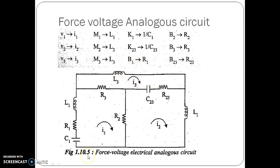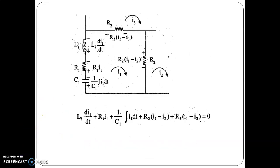Now we write the mesh equations. Since there is no applied force, there is no input voltage source. In the force-voltage analogous circuit, voltage is the input and current is the output, so we write equations in terms of current. For mesh 1: (1/C1)∫i1 dt + i1·R1 + L1·di1/dt + R3·(i1 − i3) + R2·(i1 − i2) = 0.